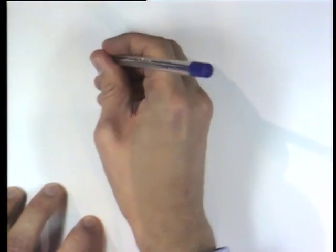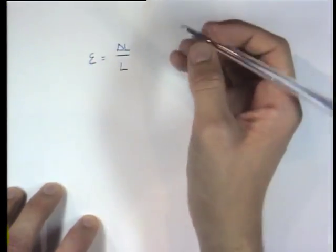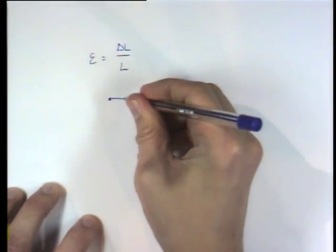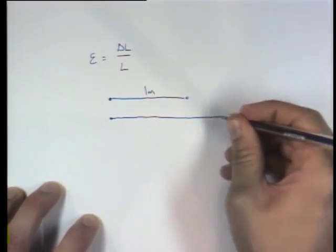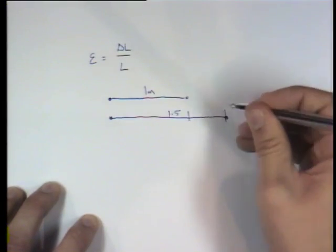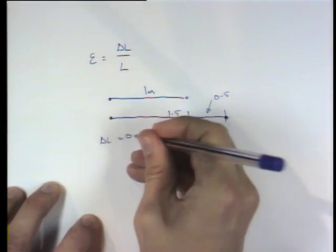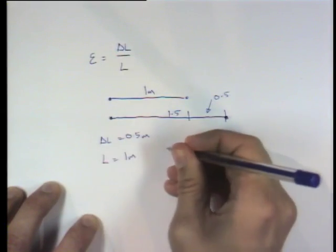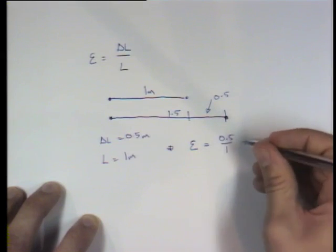So strain is generally defined as the increase in length delta L over its original length L. So if, for example, I had an elastic band which was about 1 metre in length, and I stretched it until it was about 1.5 metres in length, the increase would be 0.5. So delta L would equal 0.5 metres. The original length was 1 metre, therefore the strain would equal 0.5 over 1, or 50%.